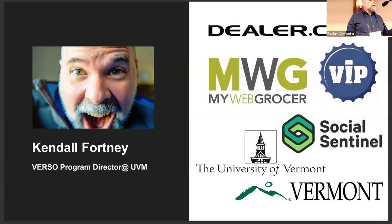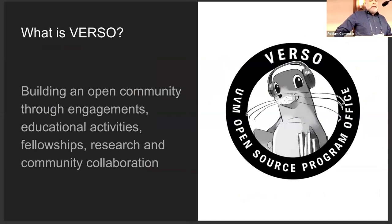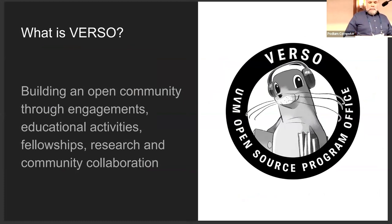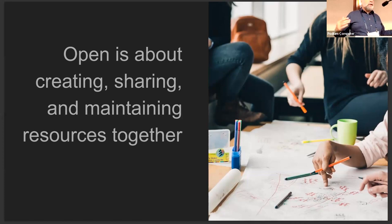I got to run a geospatial data science conference in Burlington, which was a lot of fun, and that got me some introductions that led to the point where I'm doing this work at UVM. Verso is the Vermont Research Open Source Program Office, newly funded from Sloan in the last year. We're focused on building open source communities at UVM and building engagement programs and educational aspects at UVM and beyond. For us, the definition of openness and open source is a little more vague because we're not just talking about programming — we talk about open science, open research, open work. Open is about creating, sharing, and maintaining resources together.